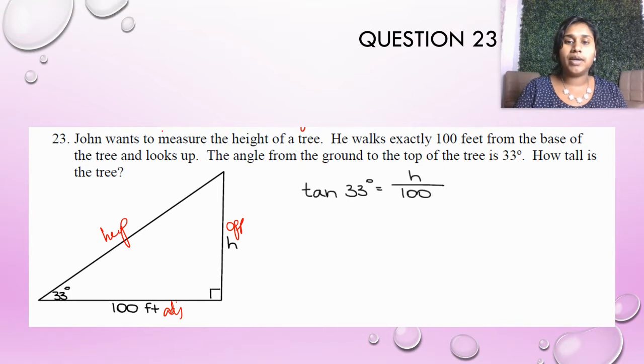So using my SOHCAHTOA, I can go ahead and set up that tangent of theta is equal to the H value, the height, the opposite side over 100.